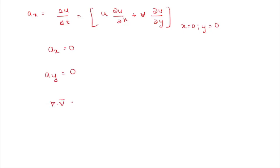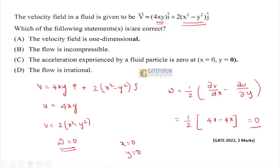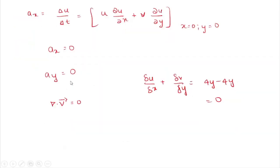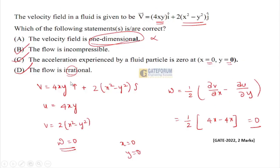For incompressible flow: ∂u/∂x + ∂v/∂y = 4y - 4y = 0, so the continuity equation is satisfied and the fluid is incompressible. Therefore options B, C, and D are correct — it is not one-dimensional, it is incompressible, acceleration is zero at x = y = 0, and the flow is irrotational. This completes the GATE 2022 Fluid Mechanics questions for Mechanical Engineering. Thank you, students.